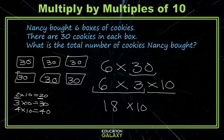So now back to our friends over here: 18 times 10. We know that the 1 will move up a place value from the tens to the hundreds, the 8 will move up from the ones to the tens, and then we just have our 0. You want to try one more? I thought so.